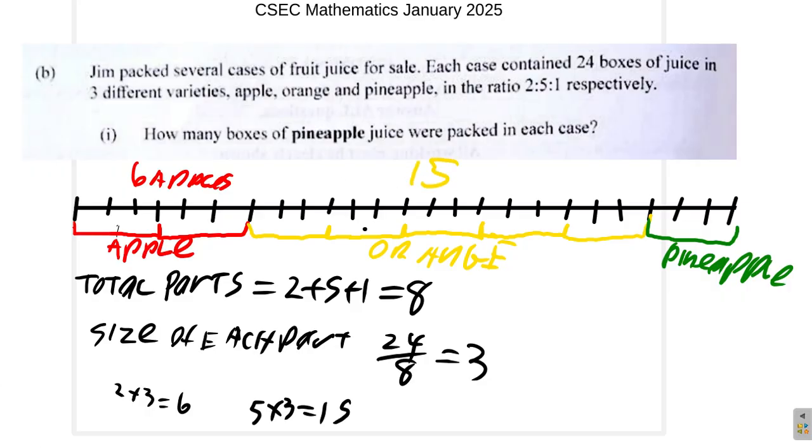And then, the pineapple, it is 1 times 3 gives you 3. So, there are 1, 2, 3 pineapples. All right? So, 3 pineapples. If you add them up, 15 plus 3 is 18. 18 plus 6 is 24. All right? It goes back to 24. So, here, it only asks for how many boxes of pineapple juice, or in each case. It would be 3. You would have to go through finding all of these.